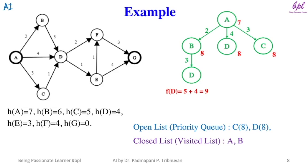Node B has one successor: node D. We calculate f(D) = 5 + 4 = 9. D is already in the open list with an evaluated value of 8, which is smaller than 9, so the value of D will not be updated. This means the path from A to D through B has a higher cost than the direct path from A to D, so the path through B will be considered a dead end.